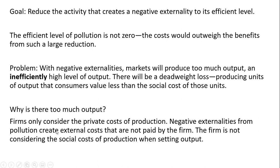Why is there too much output? Firms only consider the private costs of production. Negative externalities from pollution create external costs that are not paid by the firm — these are paid by other people. People with asthma may end up in the ER more frequently. The firm is not considering the social cost of production when setting output; it will only consider the private costs.